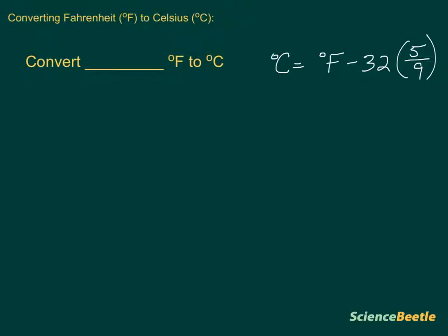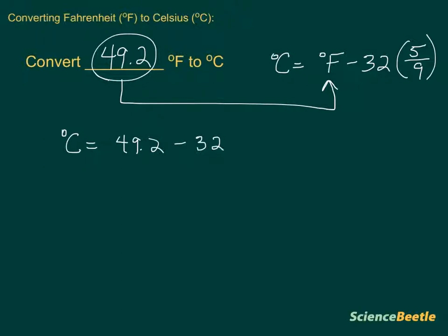So let's go ahead and assume that we're going to take, say, 49.2 degrees Fahrenheit, and we want to convert that to Celsius. The very simple thing for us to do here is to just take this number and plug it into the equation at this point. So all you want to do is plug it in and rewrite it. Degrees Celsius, then, is going to be equal to 49.2 minus the 32 times the 5 divided by 9.